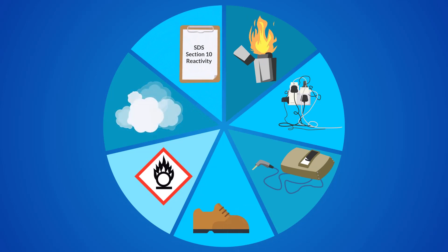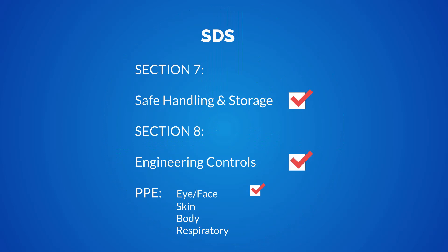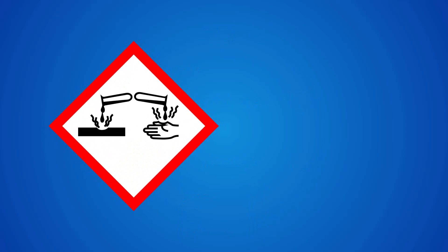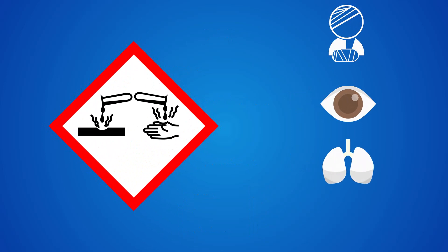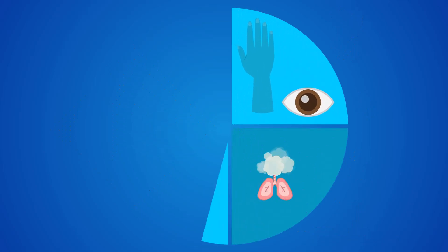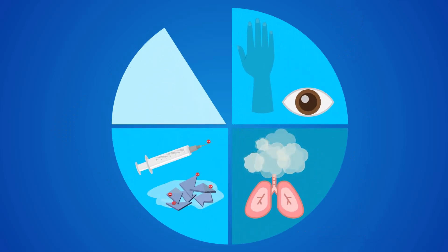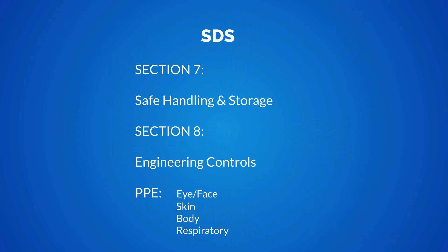The corrosive symbol is found on strong acids and alkalis that cause severe skin, eye, and respiratory tract injuries, as well as metal corrosion. The critical vulnerabilities are soft tissues, inhalation, injection, and ingestion. Other considerations are listed in sections 7 and 8 of the SDS.